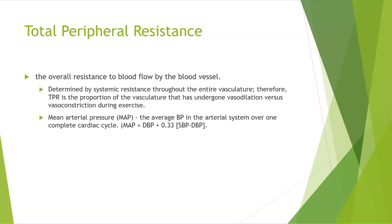Looking deeper at total peripheral resistance: TPR is the proportion of the vasculature that has undergone vasodilation versus vasoconstriction during exercise. Mean arterial pressure is the average blood pressure in the arterial system over one complete cardiac cycle. A useful equation for MAP is: diastolic blood pressure + 0.33 × (systolic blood pressure − diastolic blood pressure).